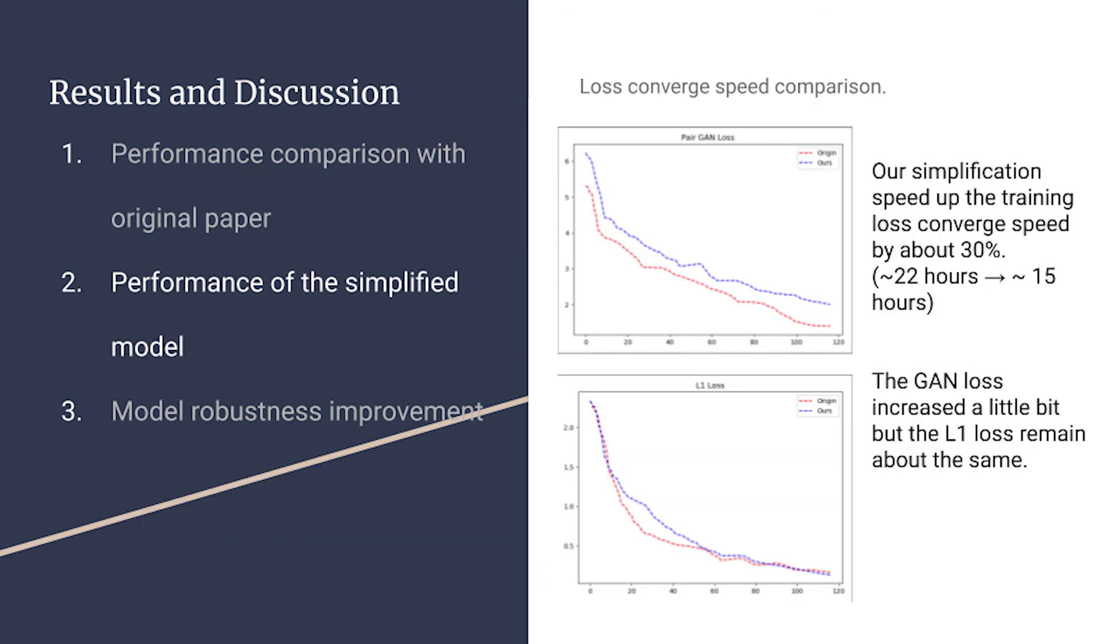For our simplified model, it can speed up the training by about 30%, but we see that we have to sacrifice some model performance. This is reasonable because the simplified model cannot generate very good intermediate poses, and the loss is shown in these two diagrams. The blue one is our simplified model, and the red one is the original model.